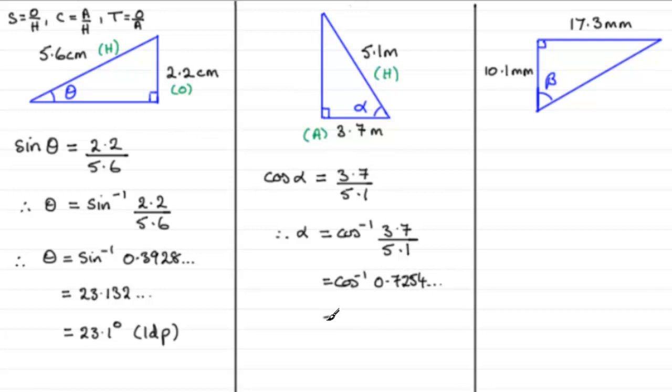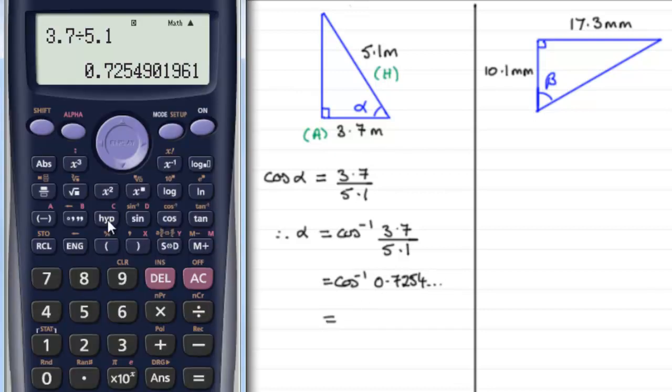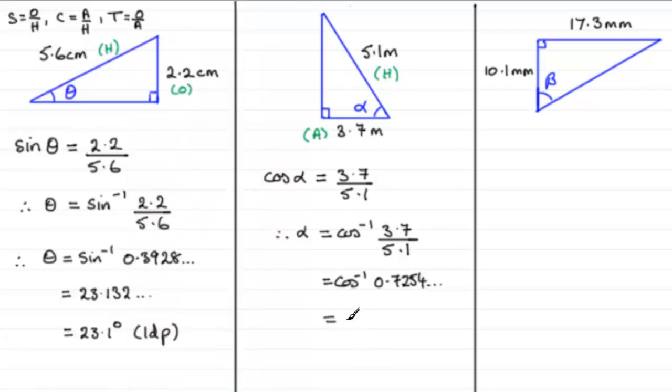And then if we work this out, bring the calculator back up, we just need to do shift cos, so that's the inverse cos now, answer, close the bracket, equals, and we get 43.490 and so on degrees. So just write that in here. So we've got that alpha then equals 43.490 and so on. And round this up to one decimal place, say, and that would be 43.5 degrees to 1dp.